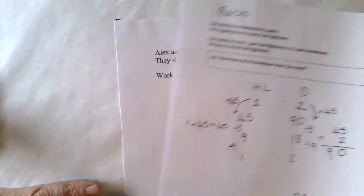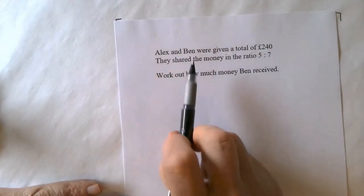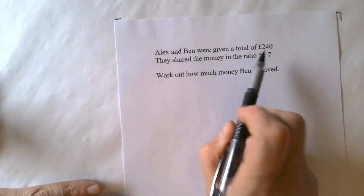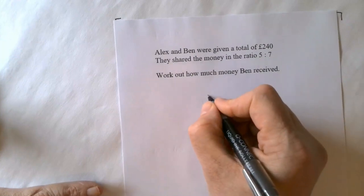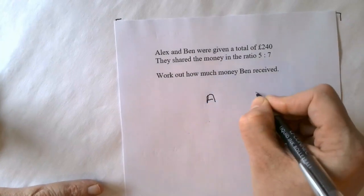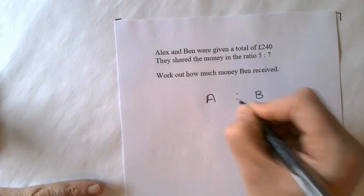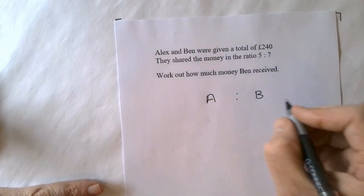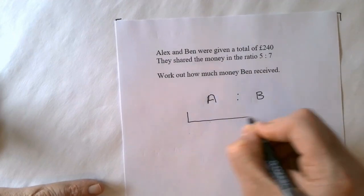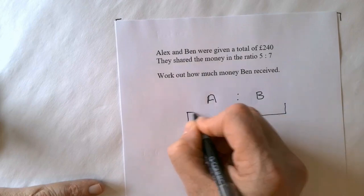In this question, Alex and Ben have been given a total amount of money. Alex and Ben have been given a total amount of £240. So altogether they're going to get £240.